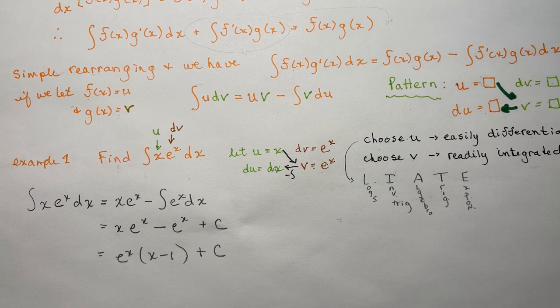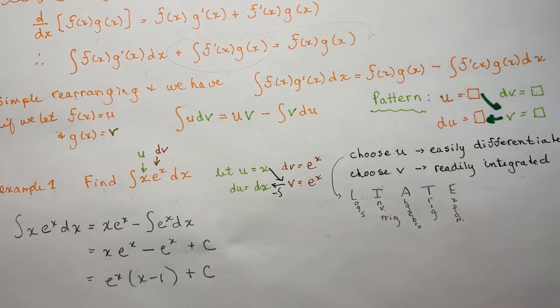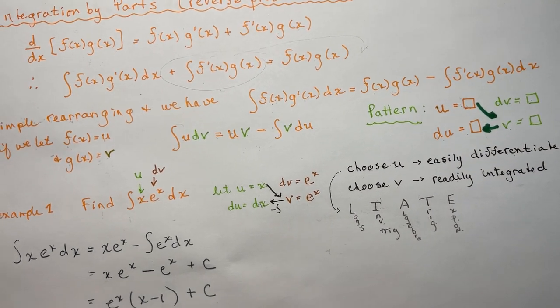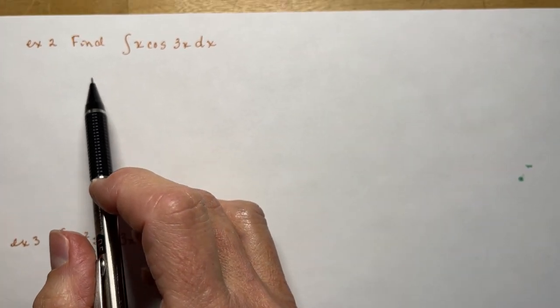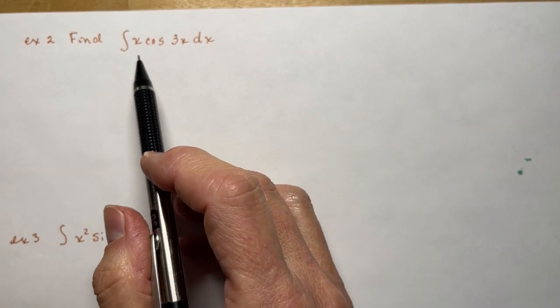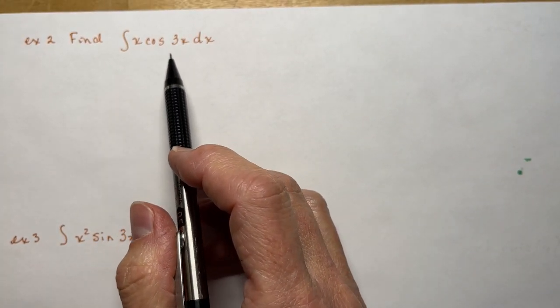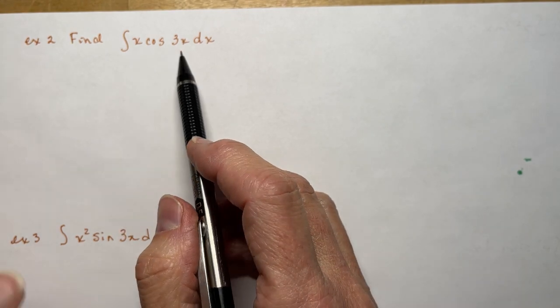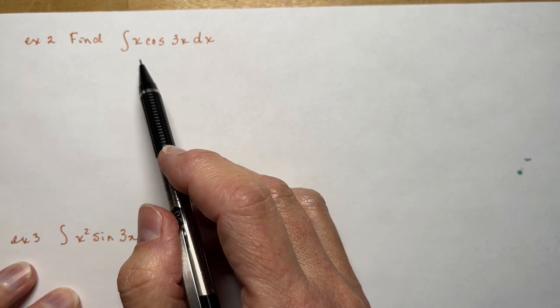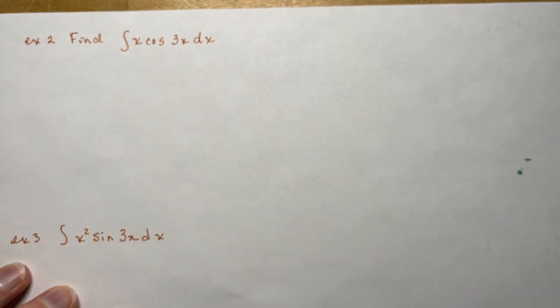So let's do some more, because practice is what it's all about. So let's find the integral of x times cos(3x). Right away you see this is a product, which requires you to use our new formula for integration by parts.